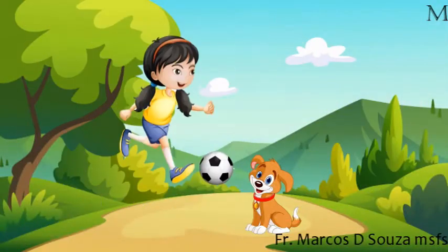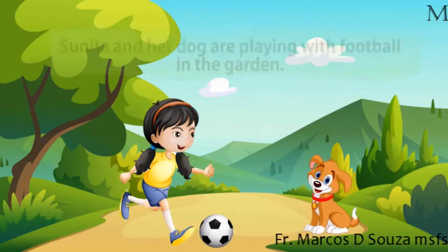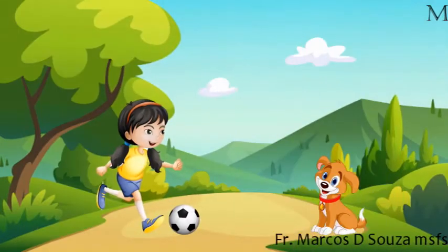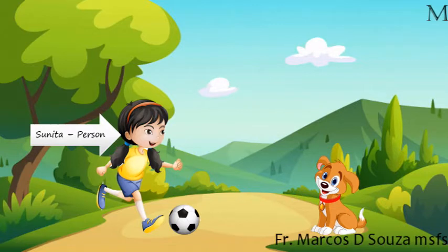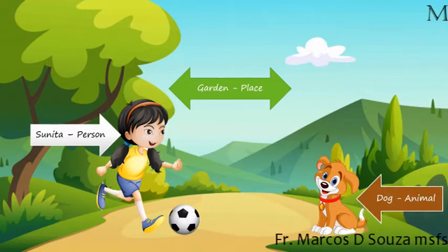Look at the following sentence: Sunita and her dog are playing with football in the garden. Here, Sunita is the name of a person. Garden is the name of a place. Dog is the name of an animal. And football is the name of a thing.